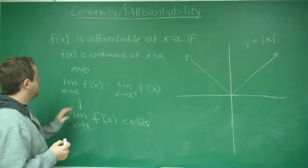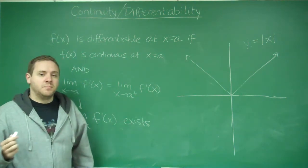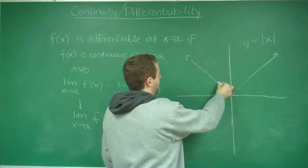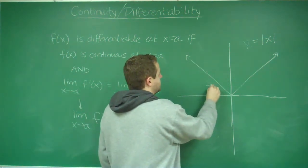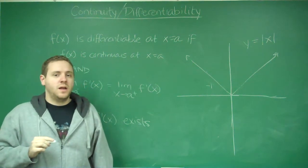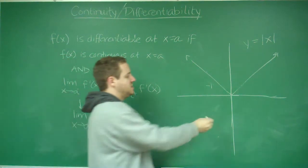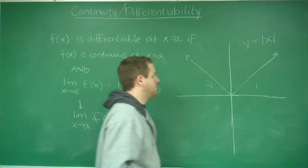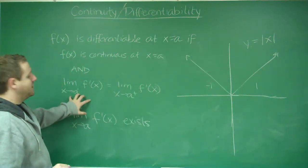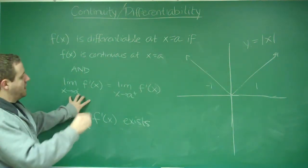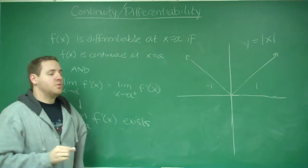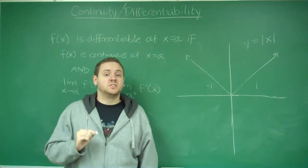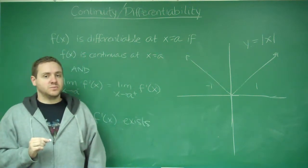Is the limit as you take the slopes from the left and the right the same? As we approach 0 from the left, the slope of this graph is a static negative 1. As we approach 0 from the right, the slope is a static 1. So this would be negative 1 from the left and 1 from the right. Those things are not equal, and therefore this function is not differentiable at x equals 0.